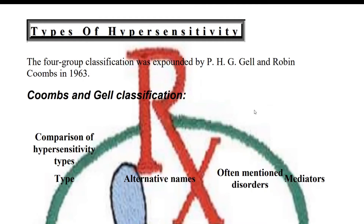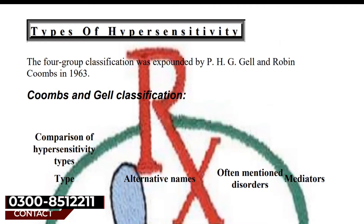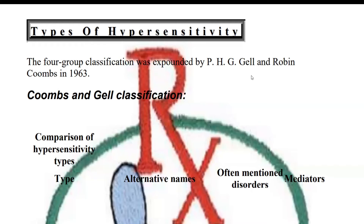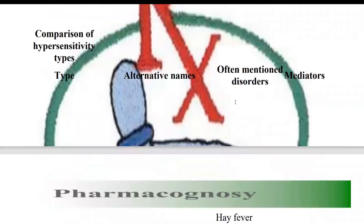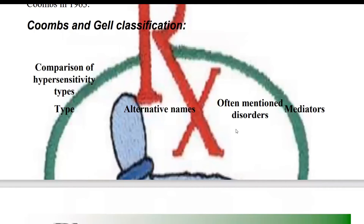Hypersensitivity reactions are undesirable, unusual, discomfort-producing, and damaging reactions which occur in your body, caused specifically by your immune system. The types are Type 1, Type 2, Type 3, and Type 4, each having a specific name.